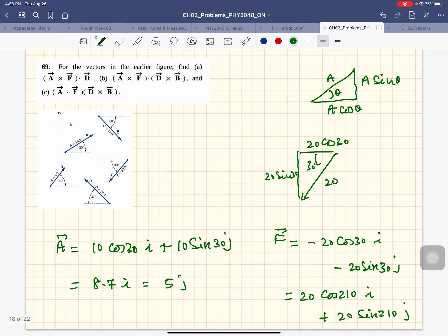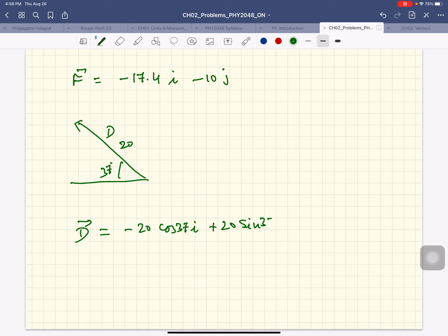And let's see what D is. D is 20 cosine 37 i plus 20 sine 37 j. The y component is positive.